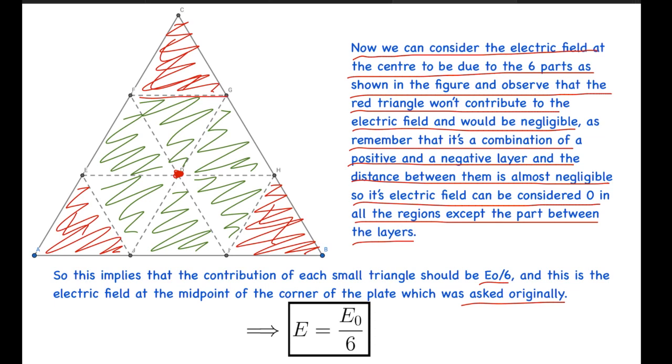asked the electric field at the corner, at the midpoint of the two plates. So this is giving us the same thing. Basically, the answer of the first part is simply E = E₀/6.